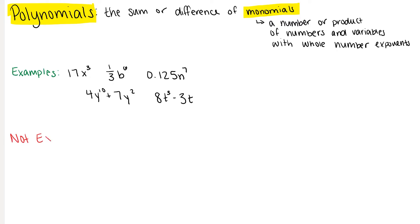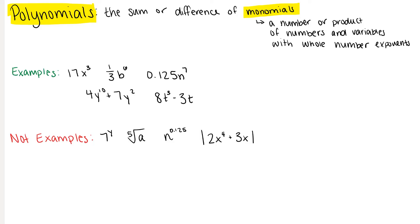The following are not examples of polynomials or monomials: 7 raised to the y power, the 5th root of a, n to the 0.125 power, or the absolute value of 2x to the 4th plus 3x.